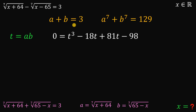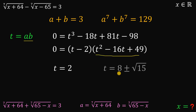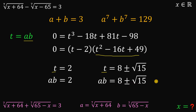Since x is real, a and b are real, so t = ab must also be real. Using factoring techniques, we factor the cubic as (t - 2)(t² - 16t + 49) = 0. This gives t = 2, or using the quadratic formula, t = 8 ± √15. Therefore ab = 2, or ab = 8 + √15, or ab = 8 - √15.